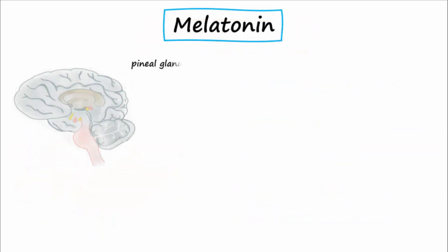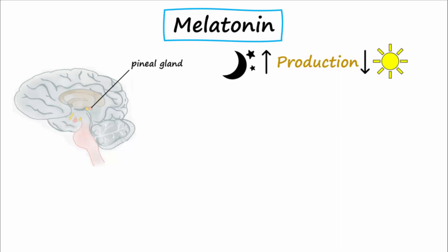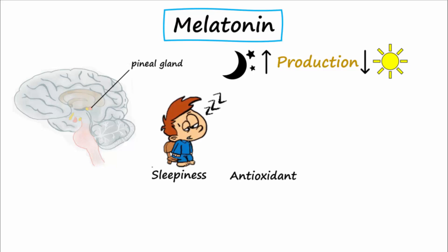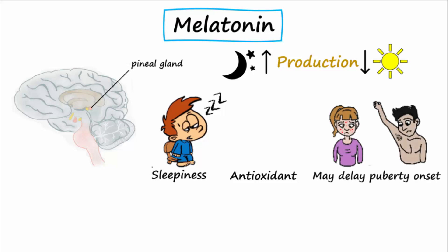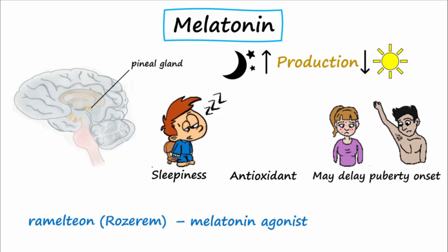The pineal gland, found in the epithalamus of the diencephalon, produces melatonin. The production of melatonin is stimulated by darkness and inhibited by light. Melatonin not only helps give you a feeling of sleepiness, but also functions as an antioxidant. It acts as a sleep and body clock regulator, not as a sleep initiator, and may also act to delay the onset of puberty. Ramelteon is a melatonin agonist that helps promote sleep onset and should be taken 30 minutes before bedtime for the best therapeutic effect.